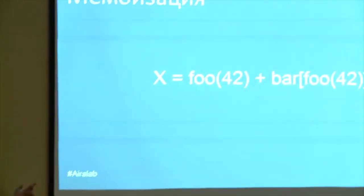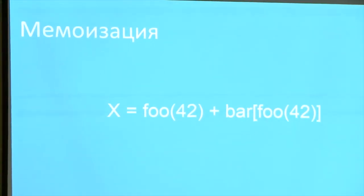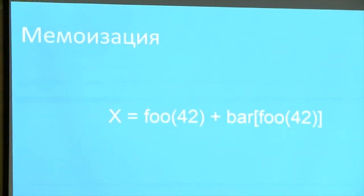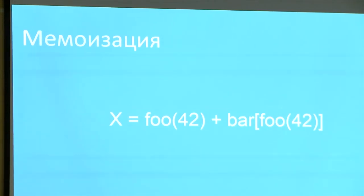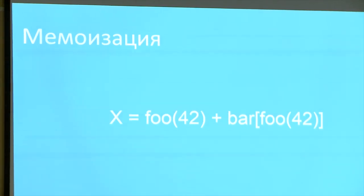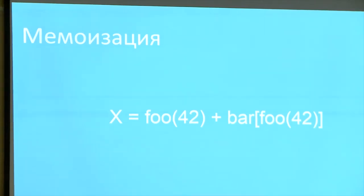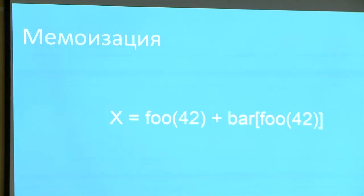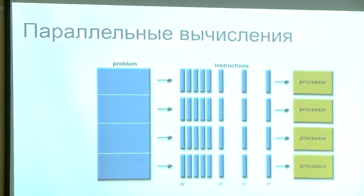Let us consider an example. If a function is pure, its result for the given arguments can be saved in memory. The saved result will be used when the function is called next time. As a result, we have gained in efficiency. This approach is called memoization.